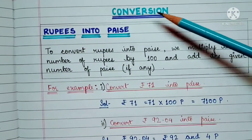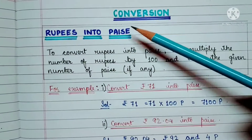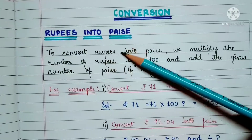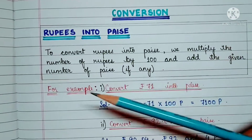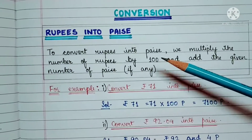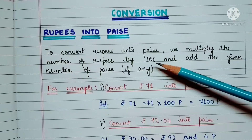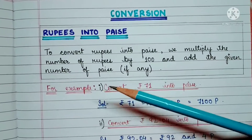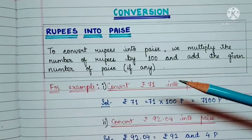Conversion of rupees into paise. To convert rupees into paise, we multiply the number of rupees by 100. We simply multiply the number of rupees by 100 and add the given number of paise, if paise is there.